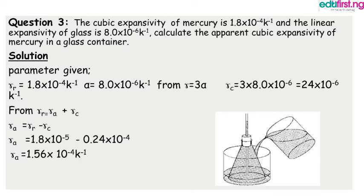Writing out the given parameters: gamma-r equals 1.8 times 10 to the power minus 4 per Kelvin. Alpha of glass equals 8.0 times 10 to the power minus 6 per Kelvin. The cubic expansivity of the container, gamma-c, equals 3 times alpha, which is 3 times 8.0 times 10 to the power minus 6, giving us 24 times 10 to the power minus 6 per Kelvin.